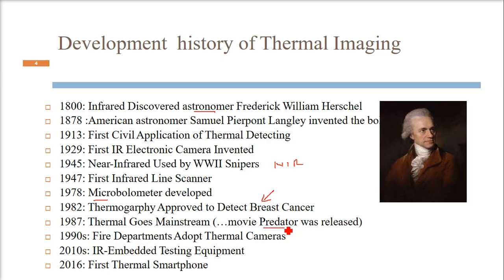In 1987, thermal goes mainstream. If you've seen the very famous movie Predator, the alien is watching the heat of the body to detect and then attack. In the 1990s, fire departments adopted thermal cameras. In the 2010s, IR embedded testing equipment was being developed and introduced, and in 2016, the first thermal smartphone and various other developments.